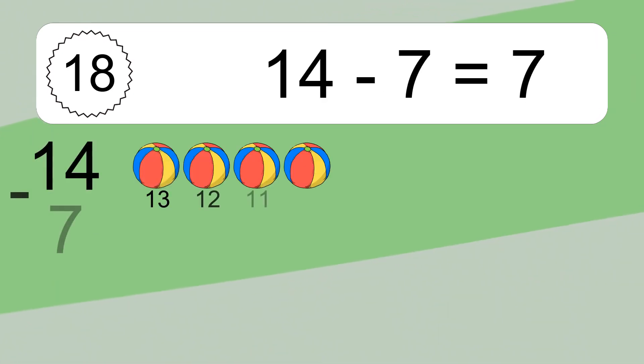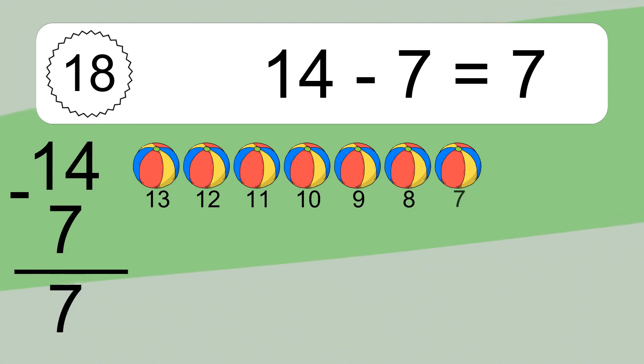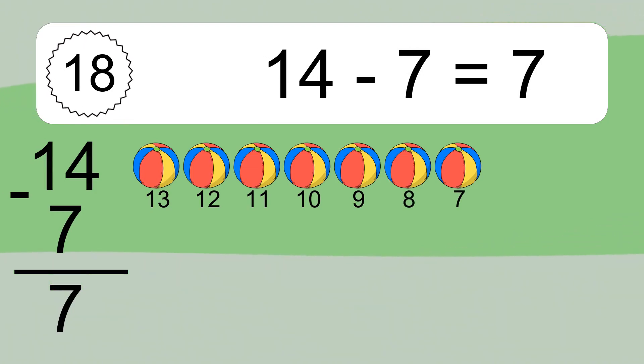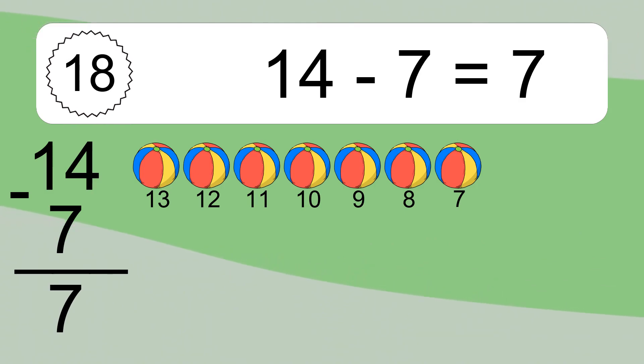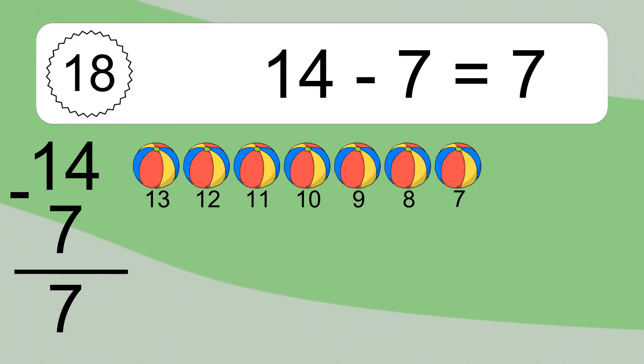Fourteen minus seven equals seven. Let's count it: thirteen, twelve, eleven, ten, nine, eight, seven.